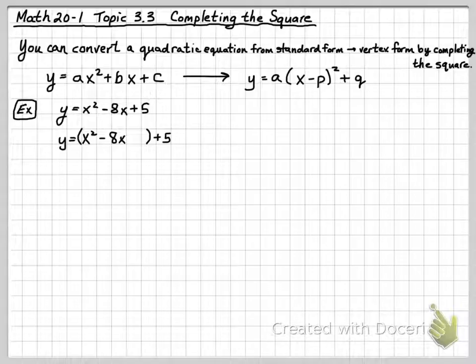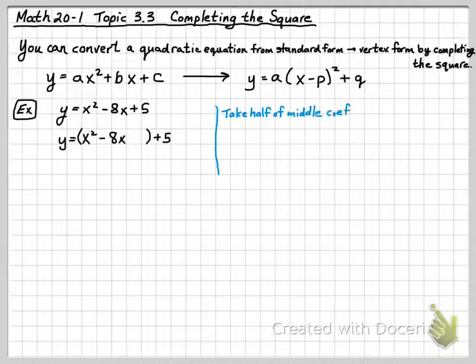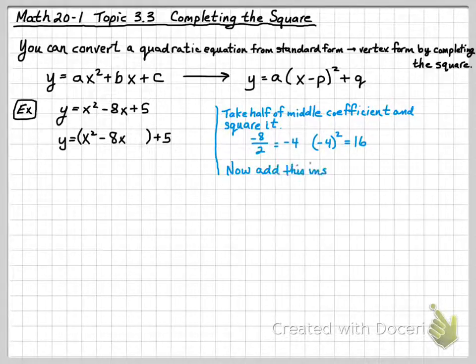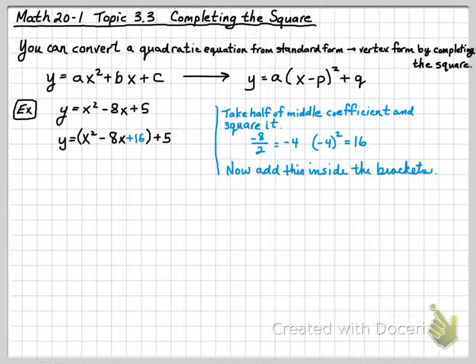The key step is to look at that middle coefficient, negative 8. You have to take half of negative 8 and square it. Half of negative 8 is negative 4, and negative 4 squared gives you positive 16. So we're going to finish off that trinomial, x squared minus 8x, by adding 16 inside the brackets. Since we made up 16 out of thin air, we have to subtract 16 outside the brackets to keep everything balanced.